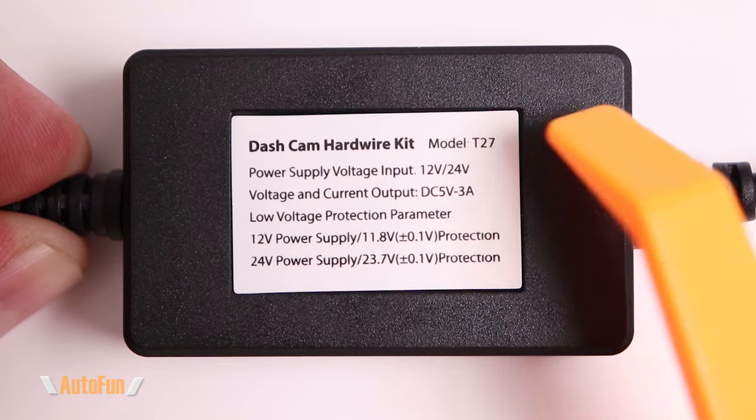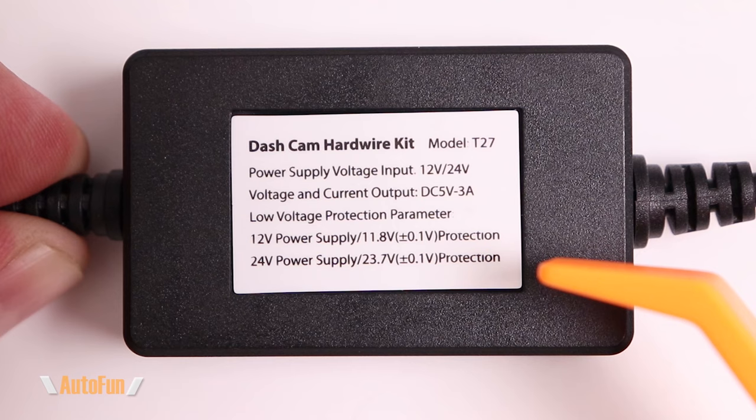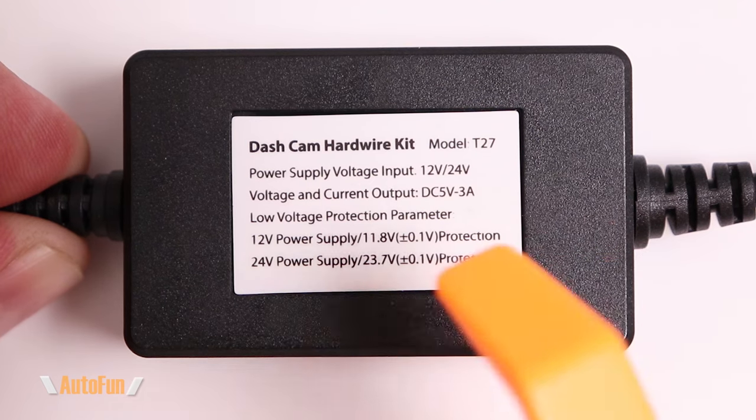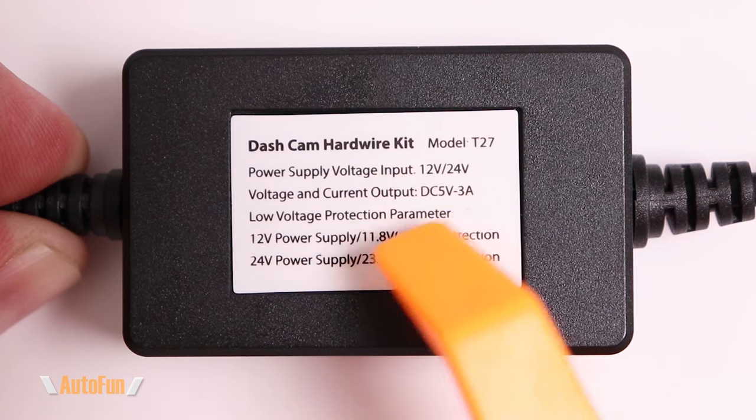The T27 hardwire kit supports low voltage protection. Because this kit is constantly pulling power from our battery, we want this kit to eventually turn off, otherwise the battery will drain. When the battery reaches 11.8 volts, this kit will turn off to protect it.